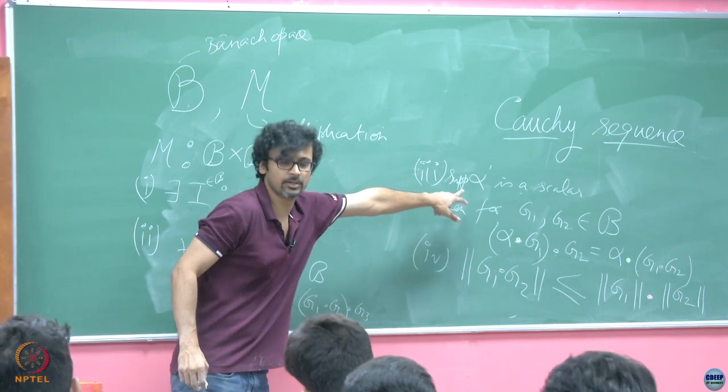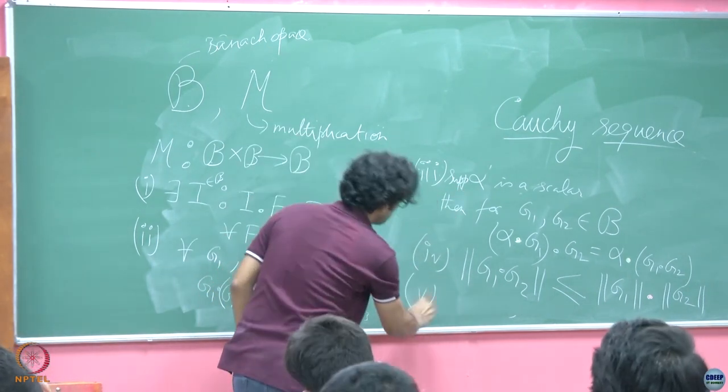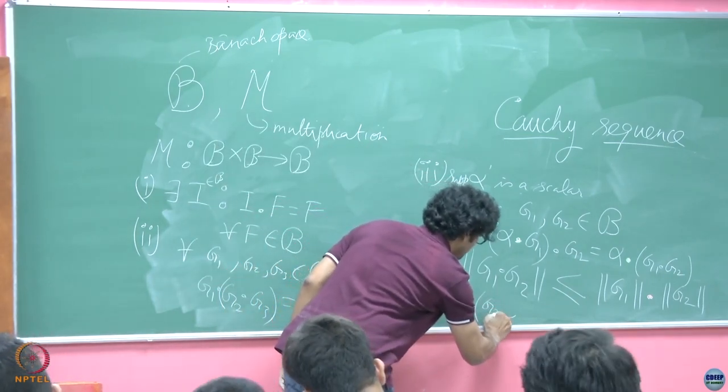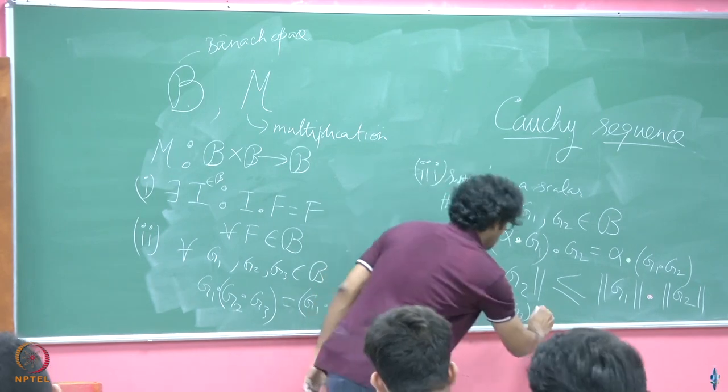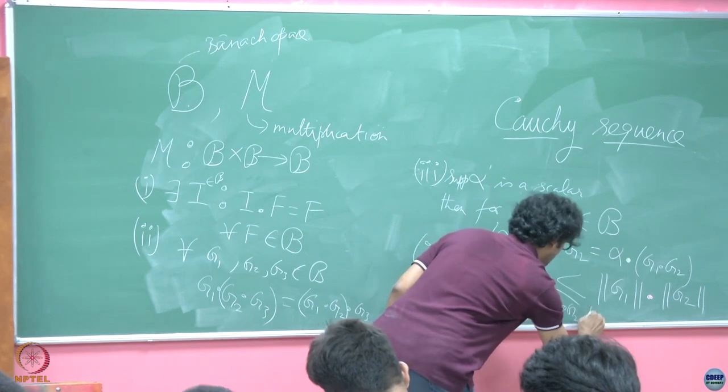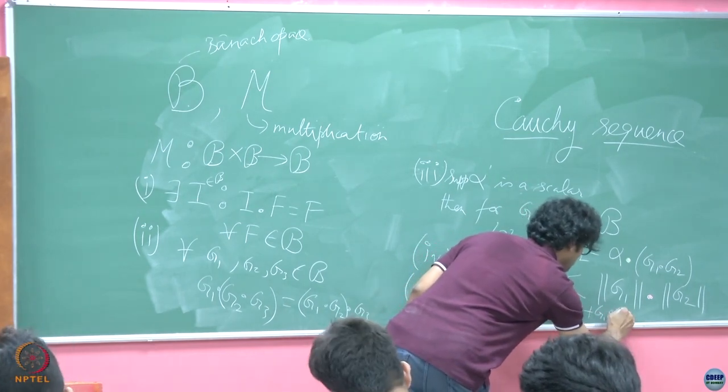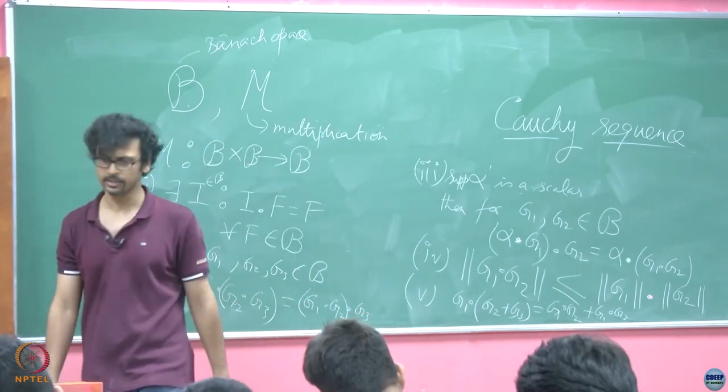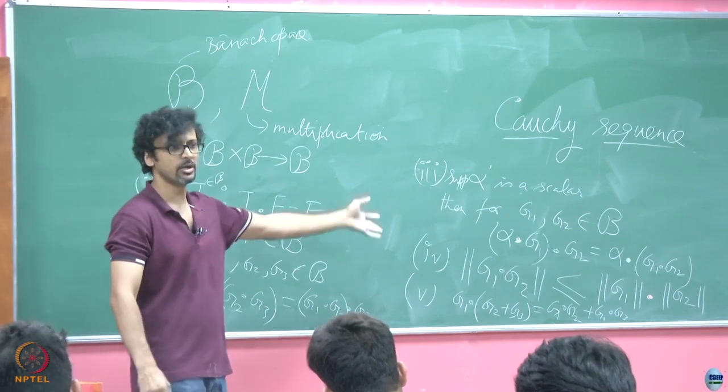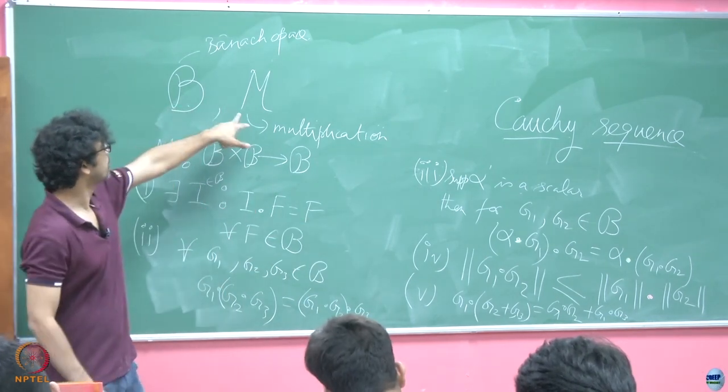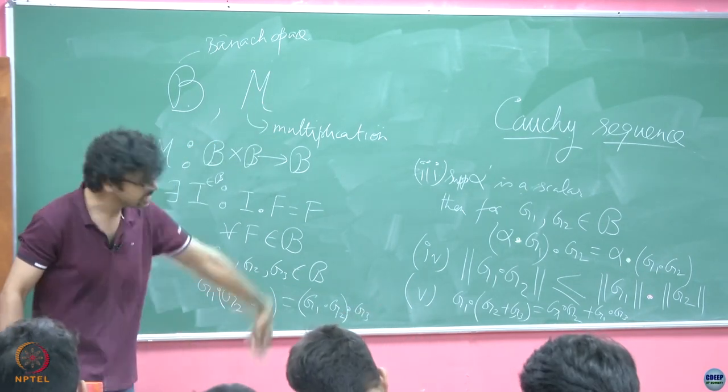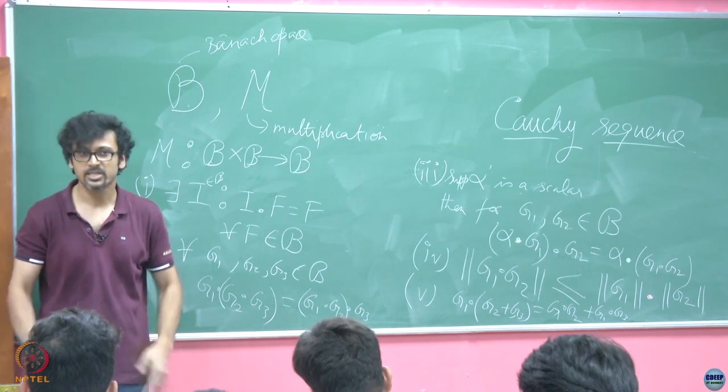And finally there is the distributivity with respect to addition. So if you have G1 operating on (G2 + G3), you might just as well say that is the same as (G1 acting on G2) + (G1 acting on G3). Of course it is understood, I am not writing it, that all of these are part of the Banach space, G1, G2, G3, so on. So any algebra, any operation that you define on a Banach space, any multiplication operation that you define on a Banach space which meets these conditions, results in a Banach algebra. And the moment you have a Banach algebra, a lot of beautiful things happen.